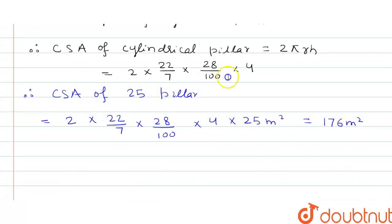have to find the cost. The cost of painting is 8 rupees per meter square, that is rupees 176 into 8, which equals rupees 1408.